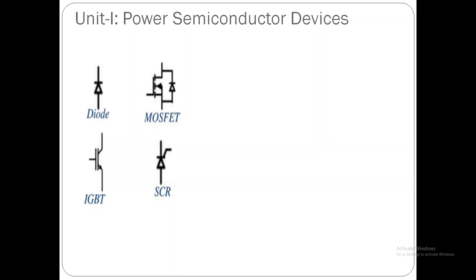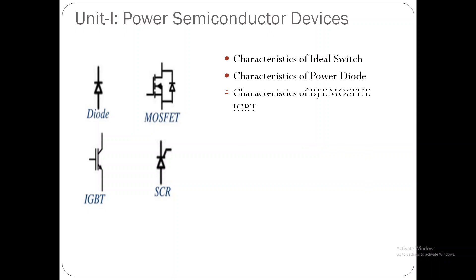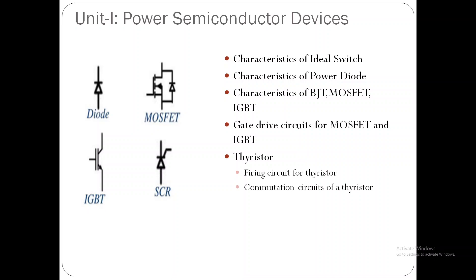In Unit 1, we shall cover power semiconductor devices, discussing power diode, power MOSFET, IGBT, and SCR. We shall discuss characteristics of the ideal switch and then characteristics of practical switches. We shall also discuss control circuits for turn-on and turn-off of these switches, such as gate drive circuits for MOSFET and IGBT. We shall also discuss switches in the thyristor family, including the thyristor — a major switch used in power electronics for power system applications — and a few more switches in that family.